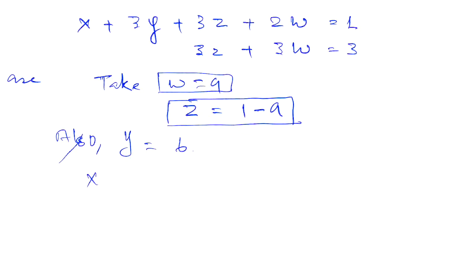And since y is also free, we can take y equal to some other number, say b. And we can write the solution of x using the first equation. In this way, we get x equal to 1 minus 3b minus 3 times (1 minus a) plus 2a.